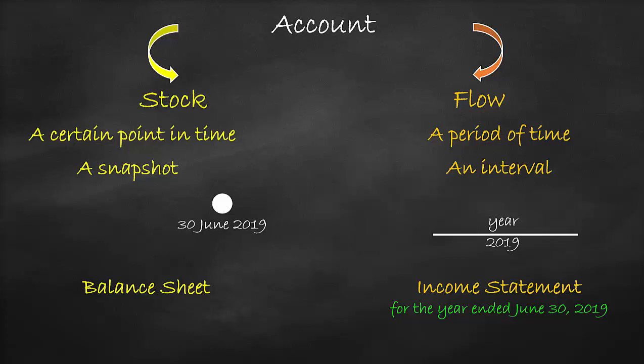This is because circumstances change day by day. For example, tomorrow the company may buy a machine; therefore, assets will change. And that is why we write the balance sheet as 'as of June 30th, 2019,' in order to reflect the total assets, liabilities, and equity at the last day of the financial year.